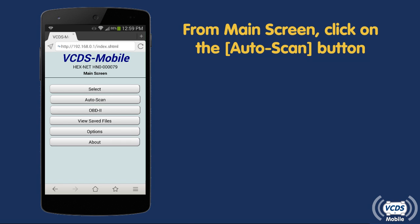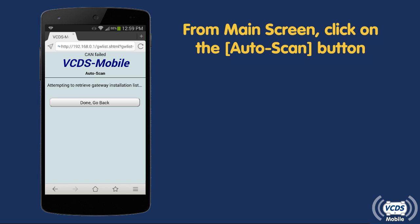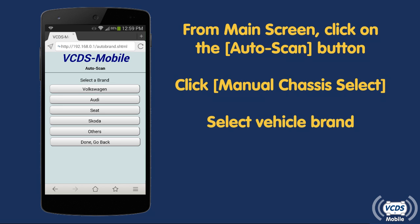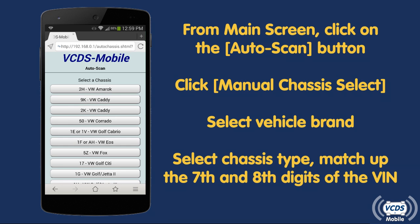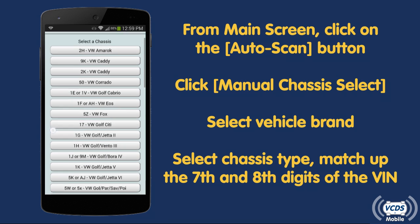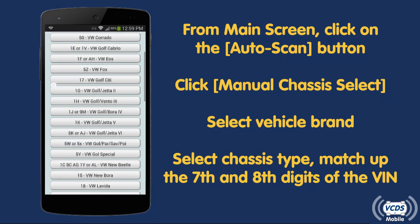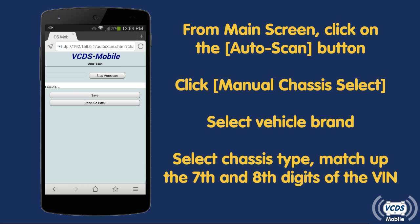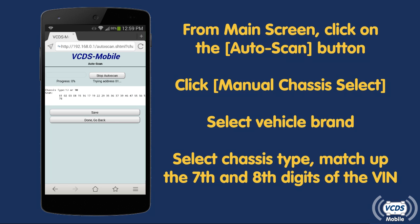If the vehicle uses a K-Line for diagnostics, then there is no gateway list to be found. Click on the Manual Chassis Select button, then the brand of vehicle you are working with. The chassis code is usually the 7th and 8th digits of the VIN. For example, a 2004 Jetta is 9M. Make your selection, and VCDS Mobile will then start the Auto Scan.